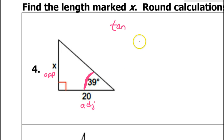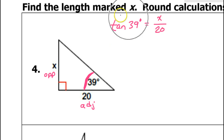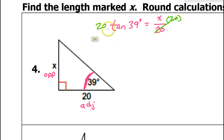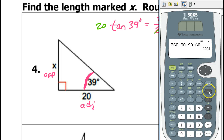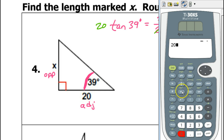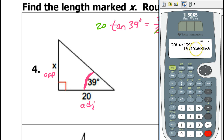So we write: tangent of 39 degrees — make sure your calculator is in degree mode — is equal to opposite over adjacent, which is x over 20. To solve for x, multiply both sides by 20. Then type 20 times tangent 39 into your calculator. They want three decimals, so that's 16.196. Round up if it's five or higher — the answer is 16.196.